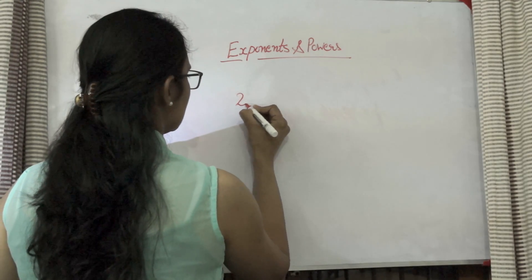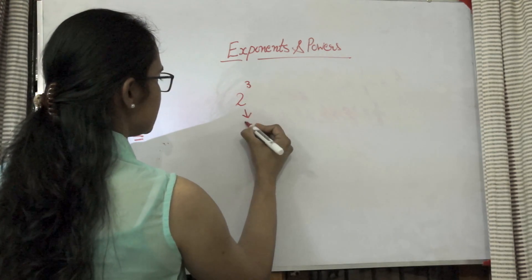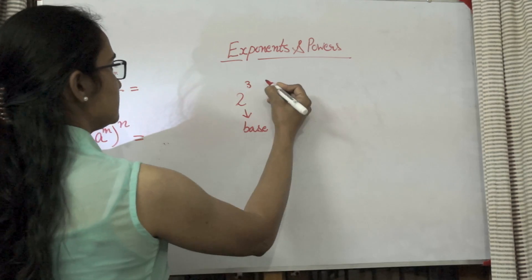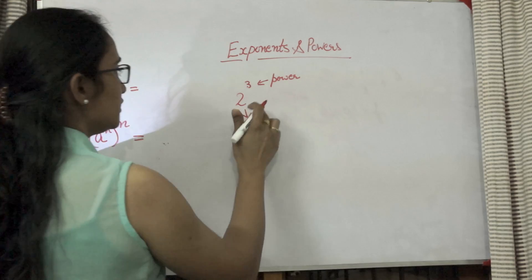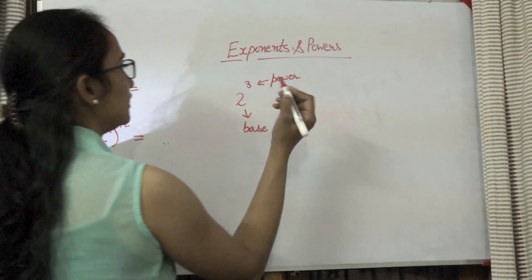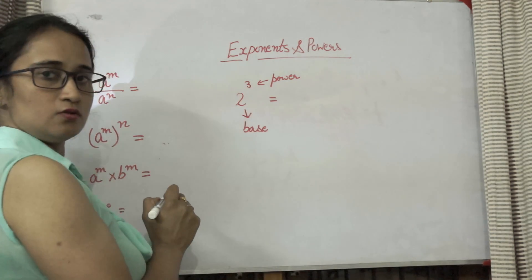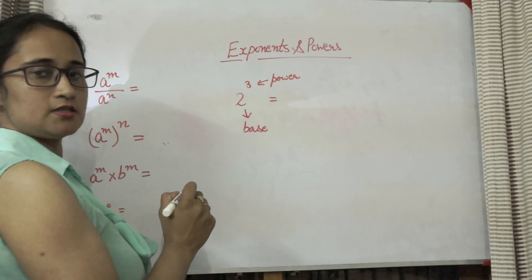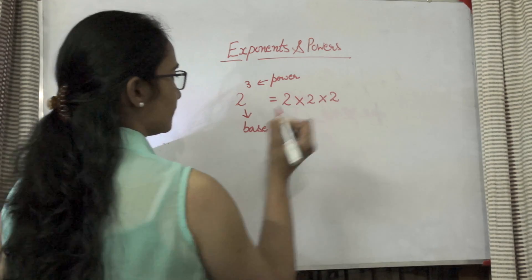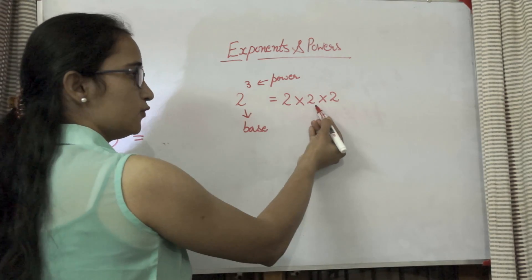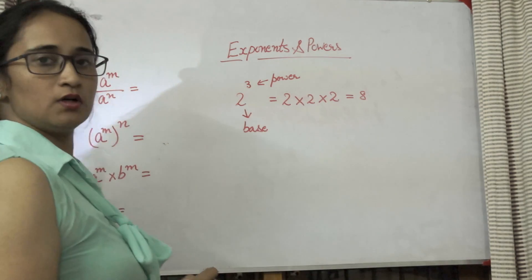If we take a number 2 raised to the power 3, here 2 is the base and 3 is the power. So we call it 2 raised to the power 3. If you want to solve it, how many times will you write 2? 3 times, because the power is 3, so 2 will be multiplied by itself 3 times. So 2 × 2 = 4, × 2 = 8. So 2 raised to the power 3 is equal to 8.